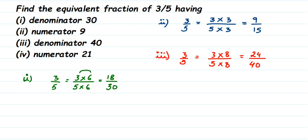The last one: we have 3/5 and the numerator should be equal to 21. With 3, we multiply a number to get 21. We know 3 × 7 = 21, so multiply 7 in the denominator: 5 × 7 = 35. We get 21/35, and the numerator is 21.